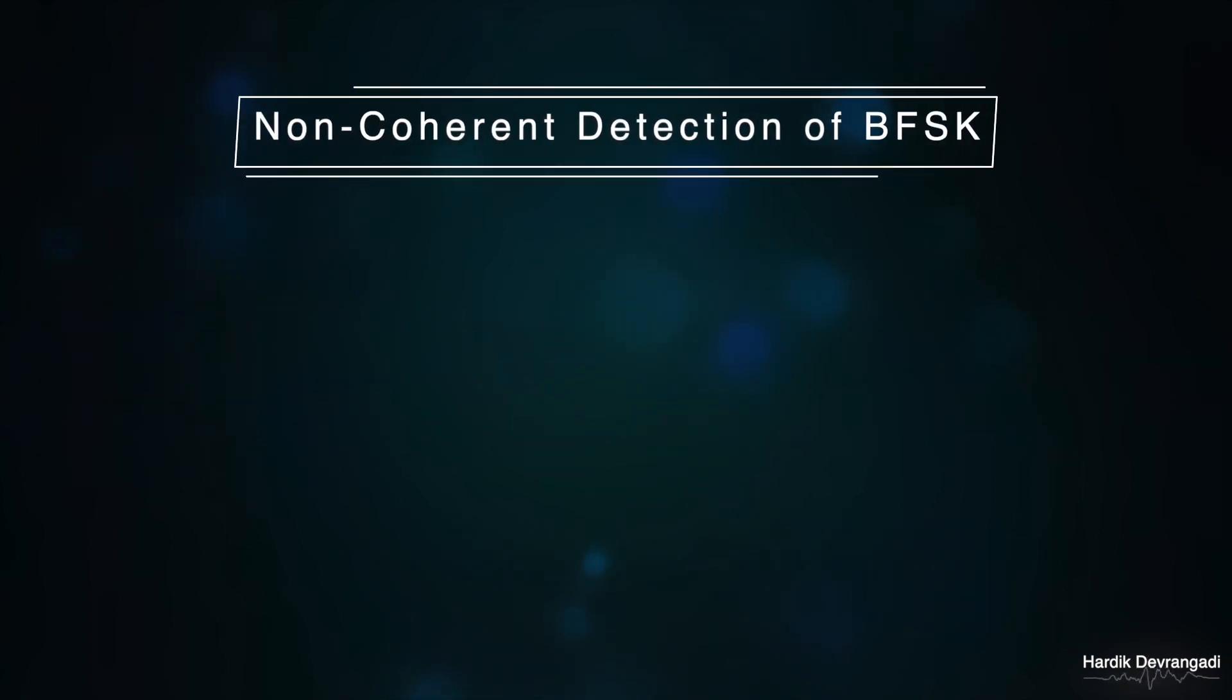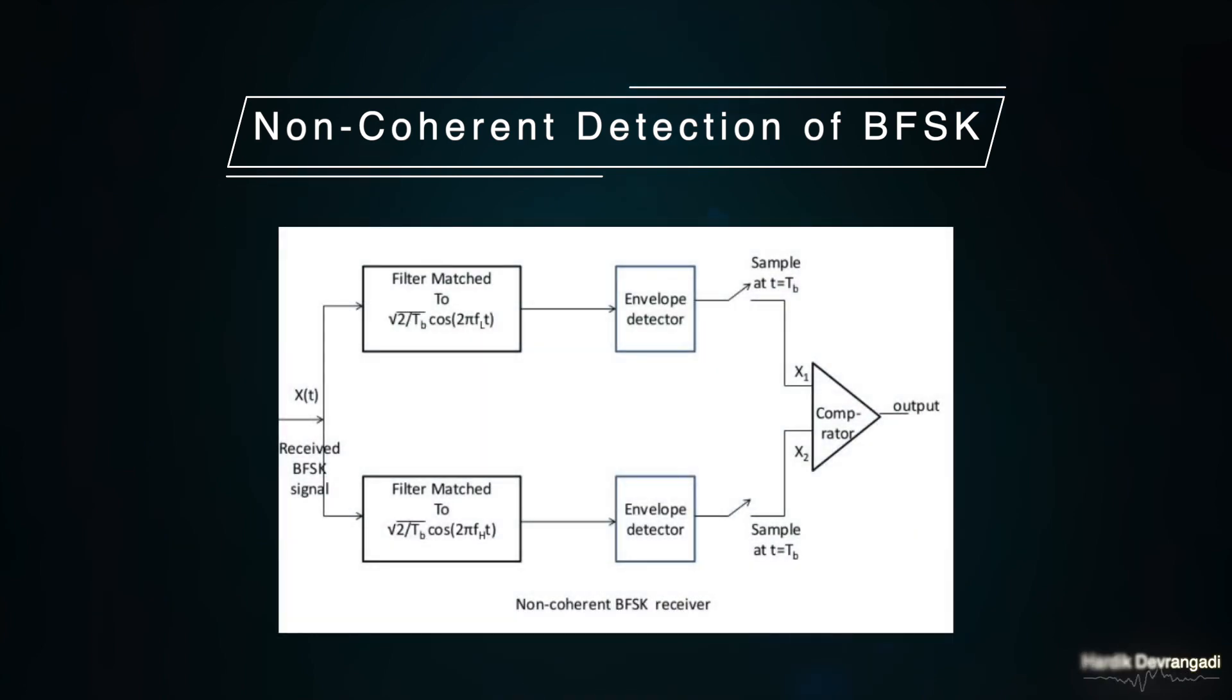Now let us see how non-coherent demodulation occurs for the BFSK signal using the receiver architecture. The receiver architecture consists of four main components: the matched filter, envelope detector, sampler, and the comparator. Now let us consider the non-coherent receiver in more detail.